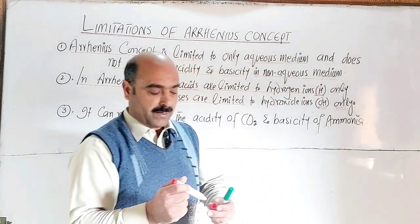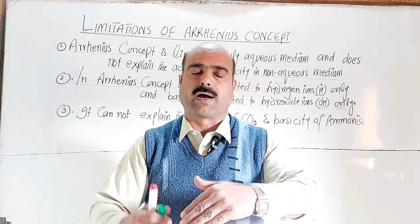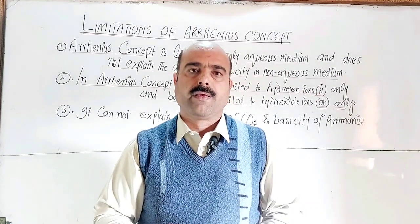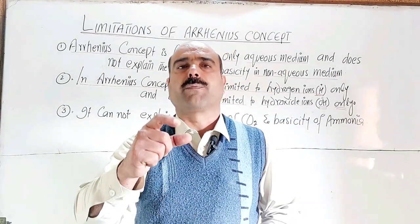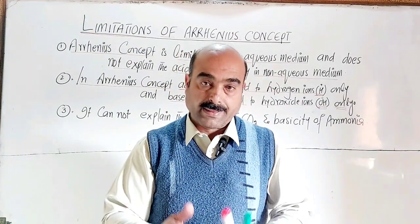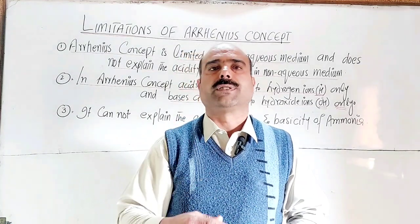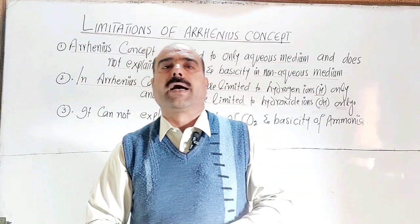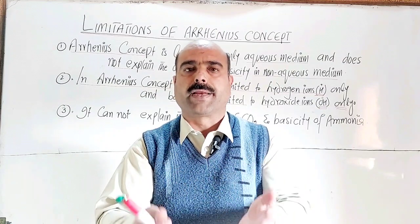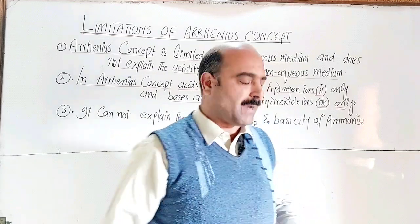In the Arrhenius concept, acids are limited to hydrogen ion donors only, and bases are limited to hydroxide ion donors only. Any species that does not donate hydrogen ions is not considered an acid, and any substance that does not provide hydroxide ions is not considered a base. This is the main limitation — the concept is restricted to only hydrogen ions and hydroxide ions.